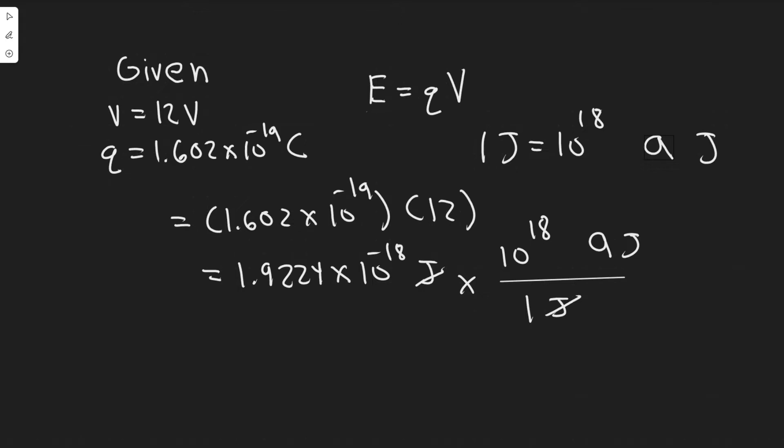And so another thing we're going to need to solve this problem is the charge of the electron. So you need to know the charge of an electron is 1.6 times 10 to the minus 19 coulombs. That's just a number you're going to have to memorize.